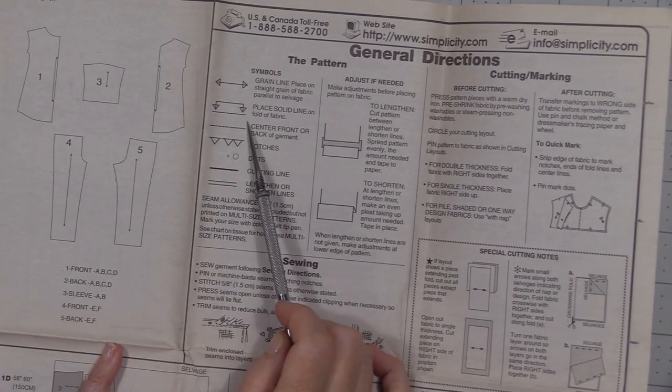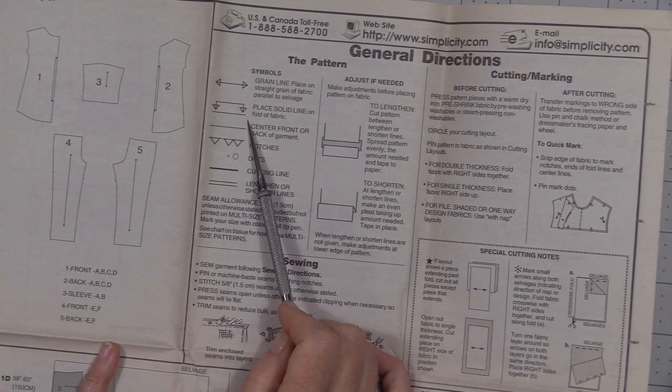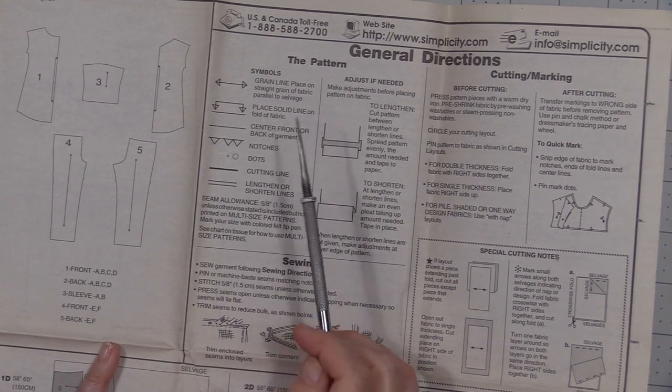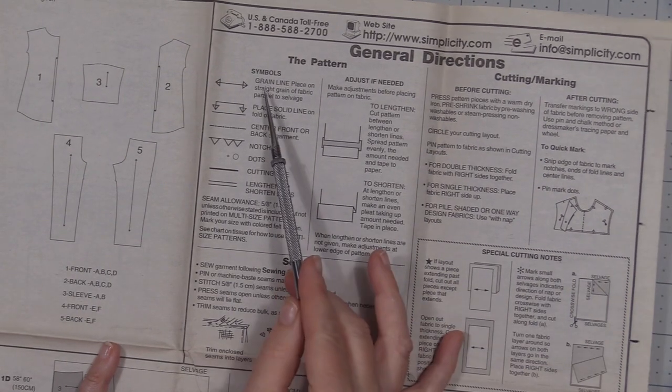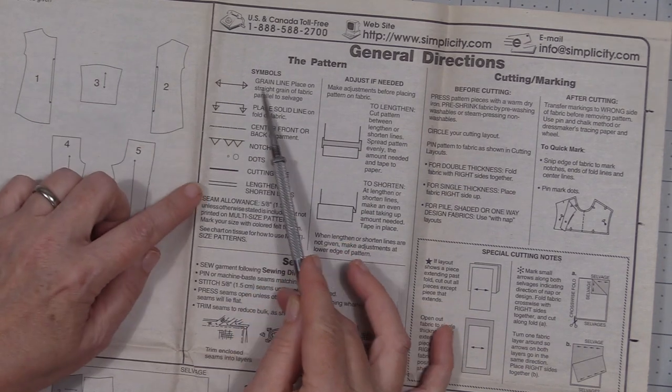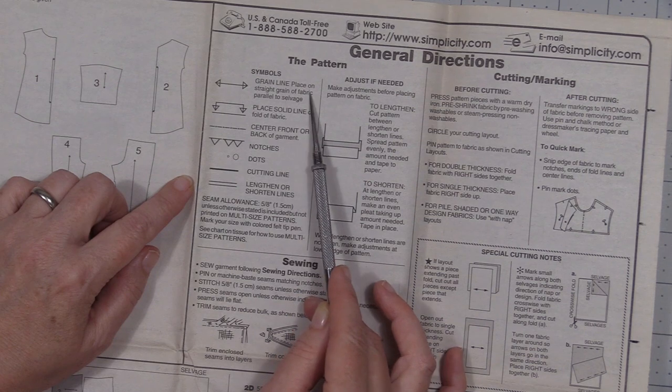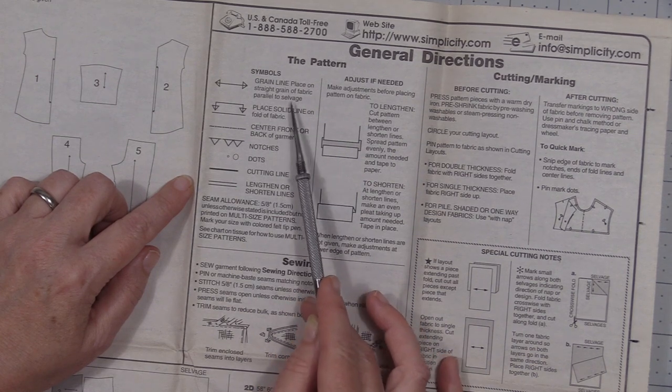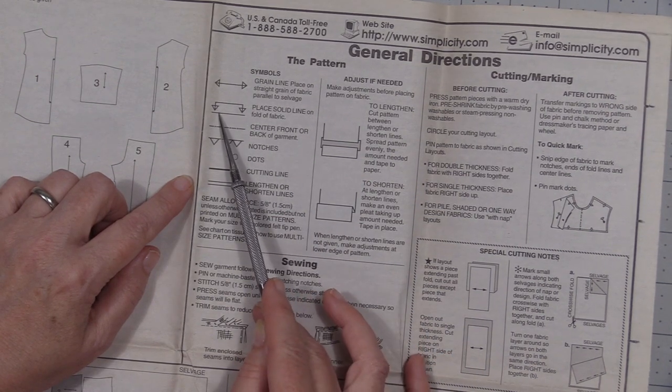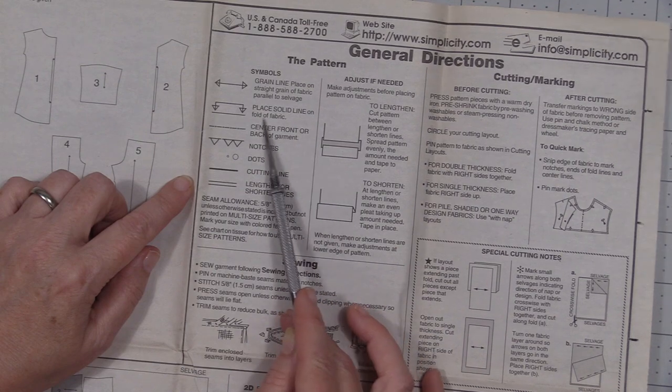So the company's going ahead and letting you know that when you see this arrow this is your grain line, you're going to place it on straight on the grain of the fabric parallel to the selvedge. Here we've got place the solid line on the fold of fabric.